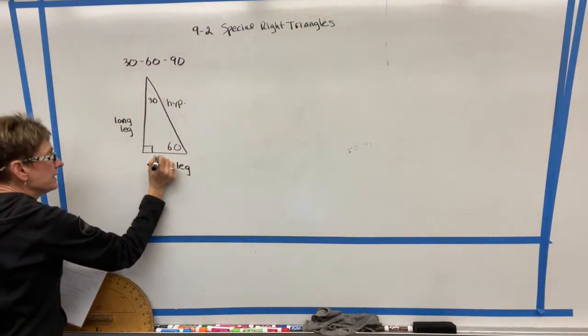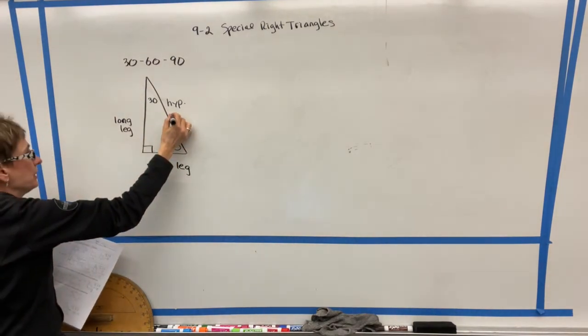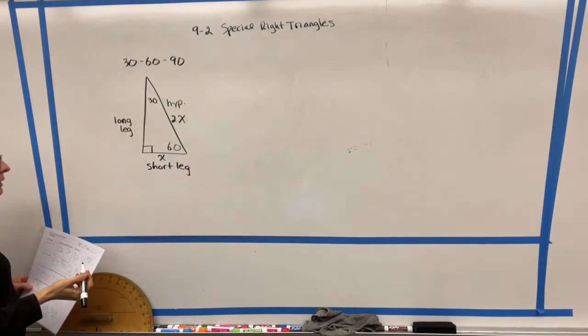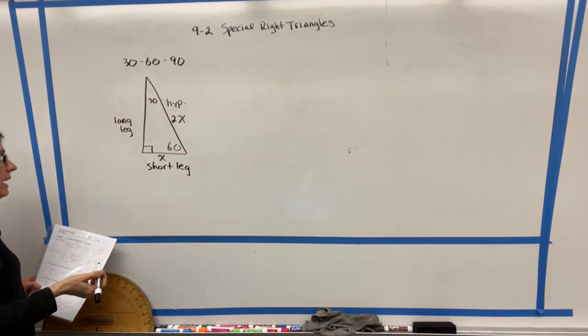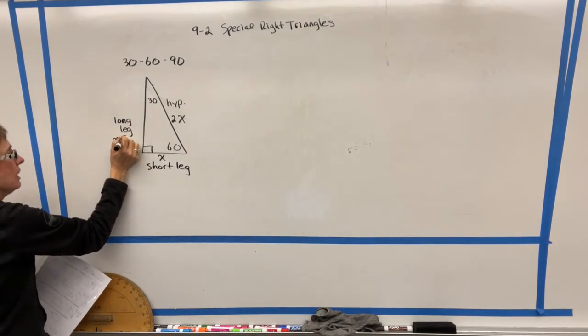Now, on a 30-60-90, we can call the short leg X. The hypotenuse is pretty easy. It's just going to be two times that. So whatever the short leg is, you double it to get the hypotenuse. With the long leg, you're going to take the X times radical three.